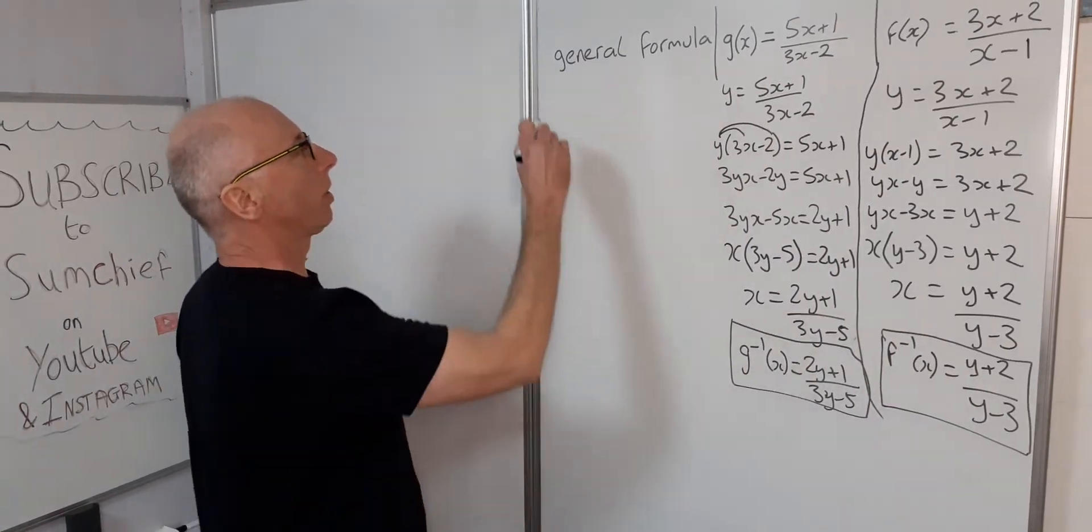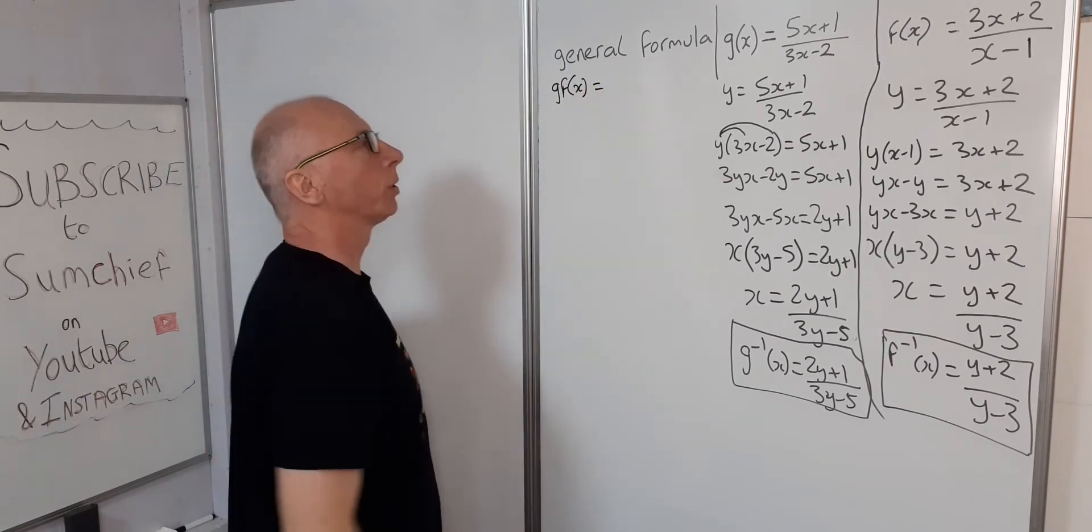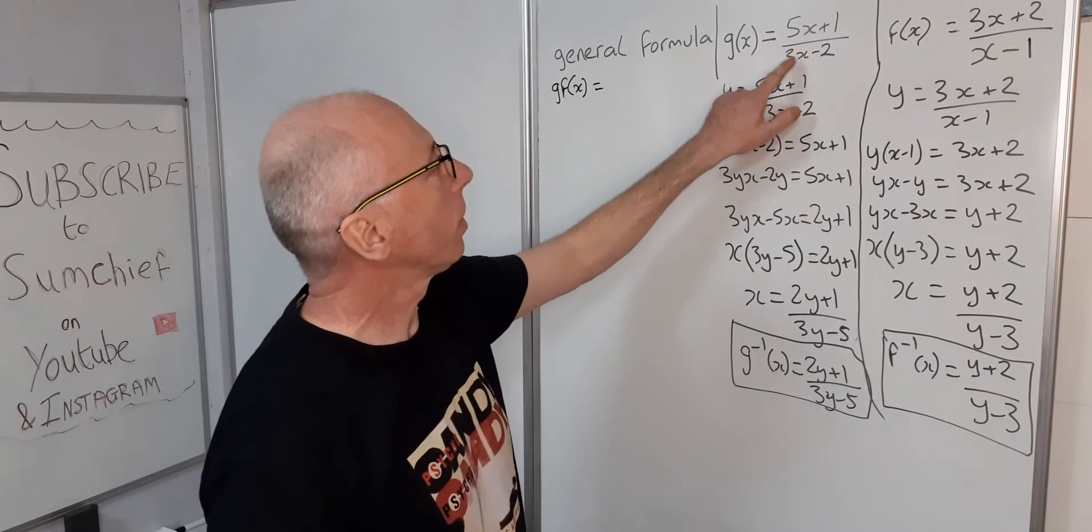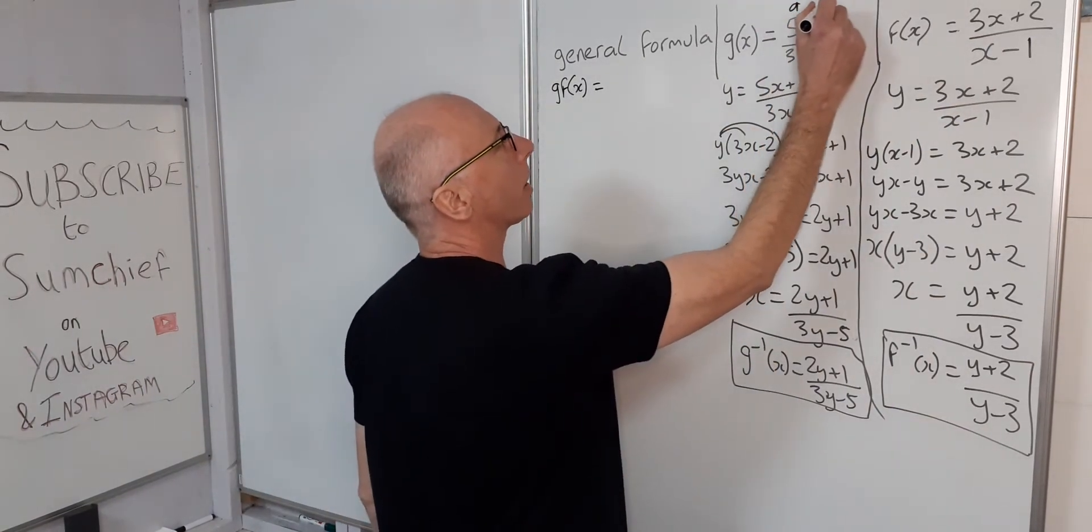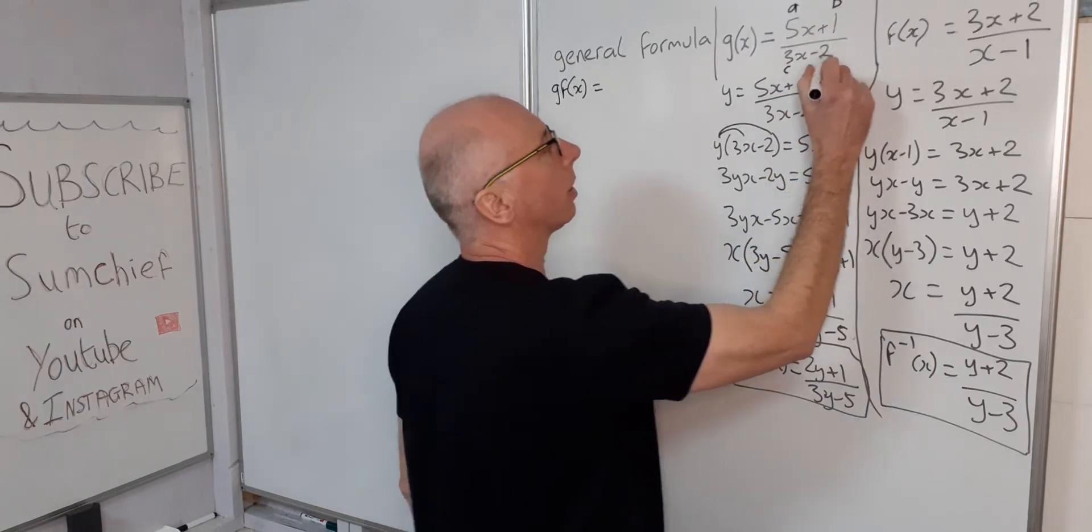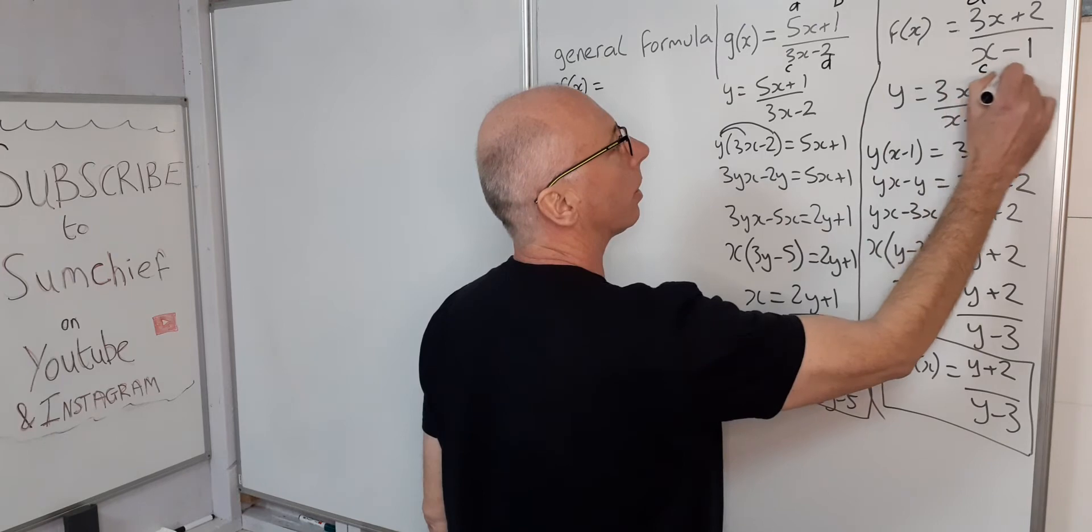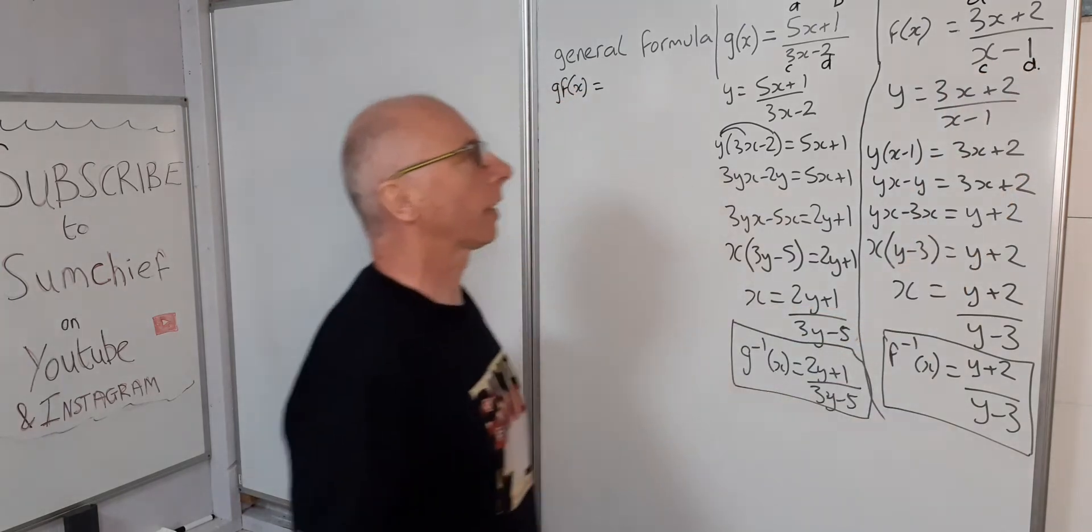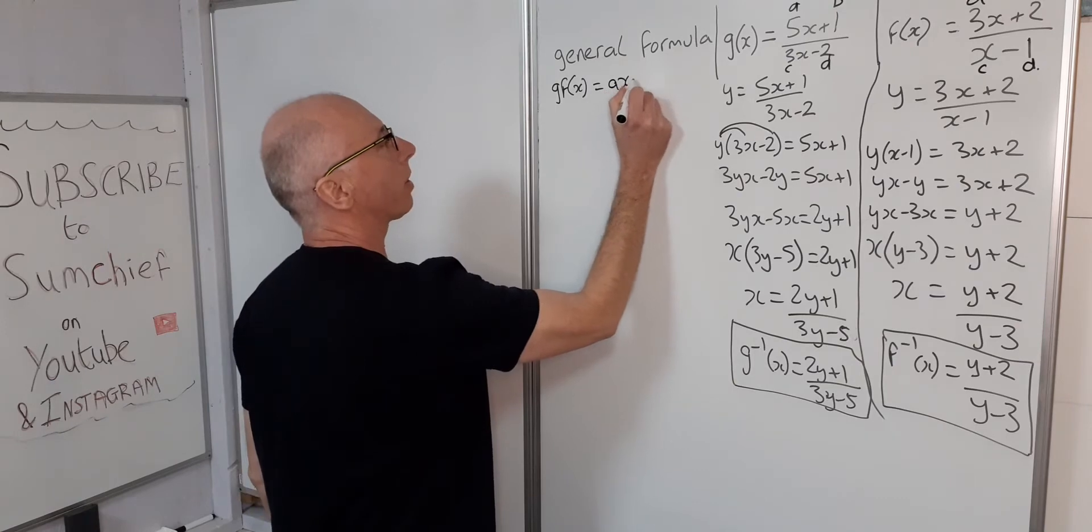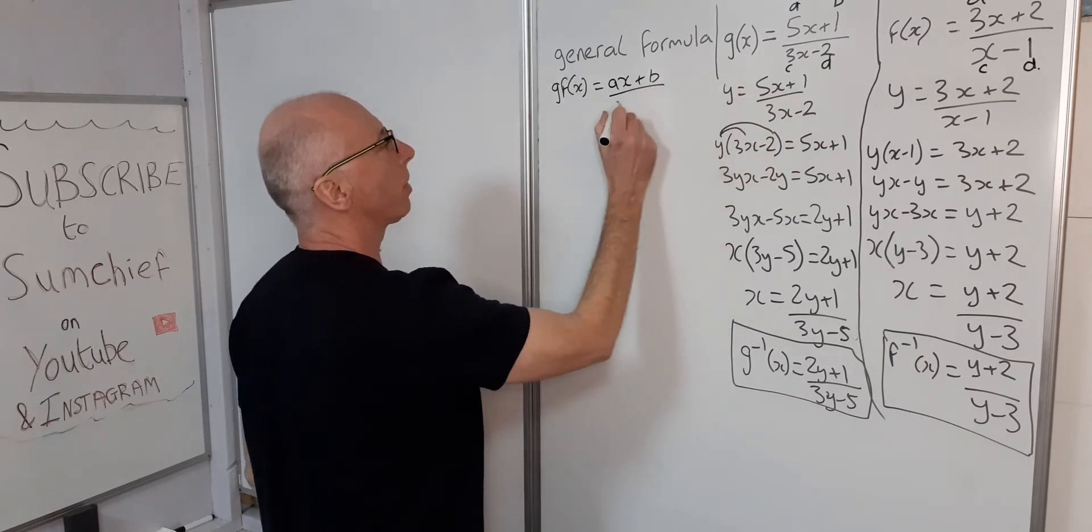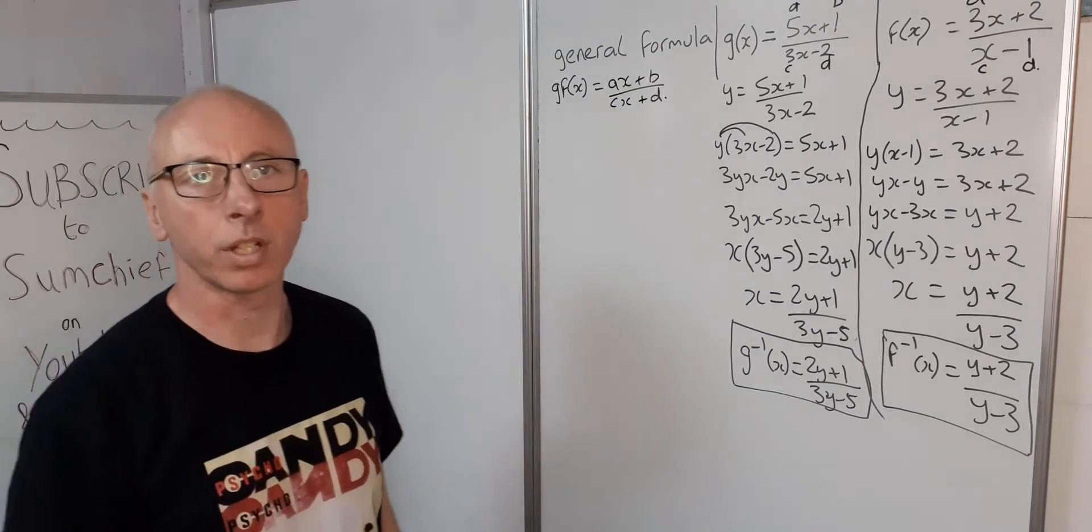So the general formula, we'll call it gf, so gf of x equals... now we need to give letters for all these coefficients, so we can call them a, b, c, d. We'll call it ax plus b over cx plus d, and that can be our general formula.